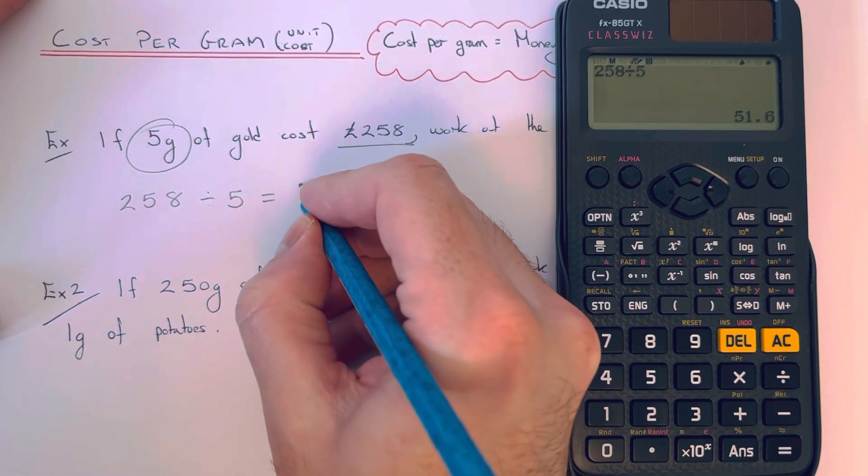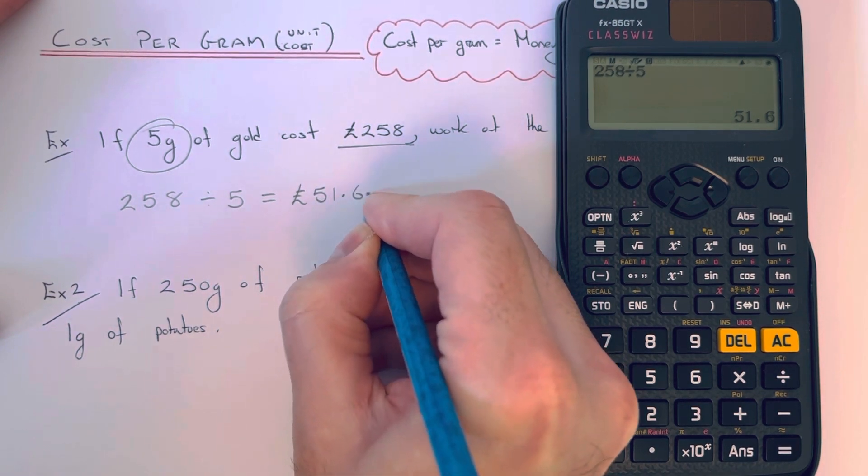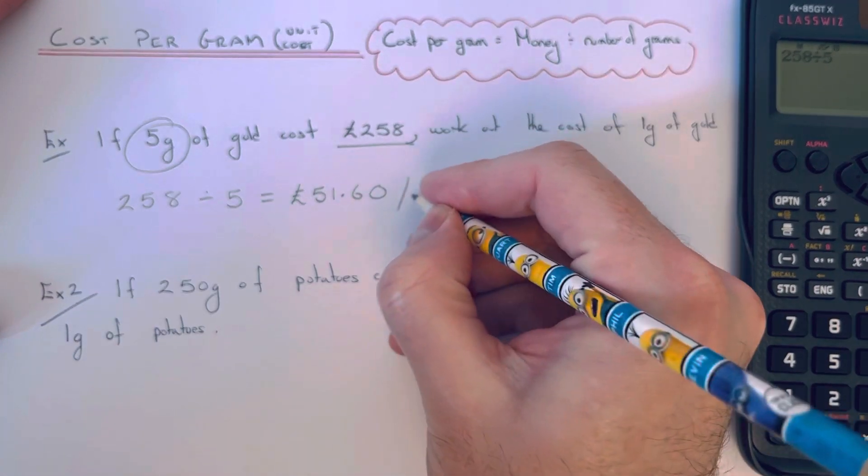So we get an answer of £51.60. That is the cost per gram.